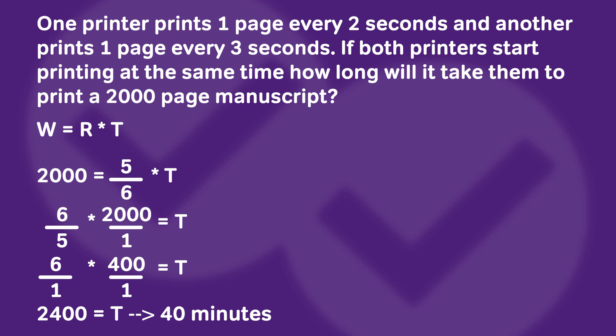Let's put this all together in a GMAT-style work rate problem. We have our two printers, they start printing at the same time, and we want to know how long it will take them to print a 2,000-page manuscript. First, we use our work rate equation to solve for the individual rates: one over two and one over three. Then we use our combined rate equation: one half plus one third equals five over six. Going back to our work rate equation, our work is 2,000 pages and our combined rate is five over six. Plugging that in, we get 2,000 equals five over six times T. Rearranging, time equals 2,400 seconds, which reduces to 40 minutes.